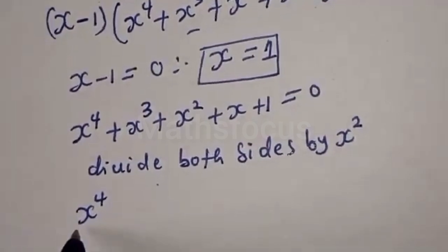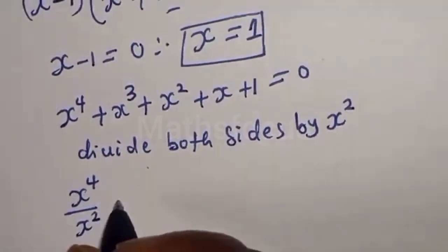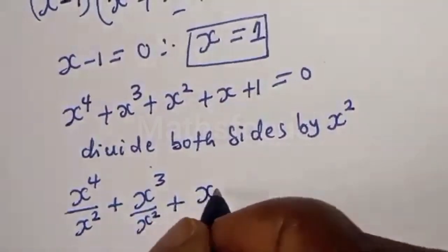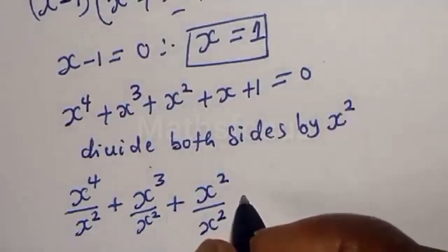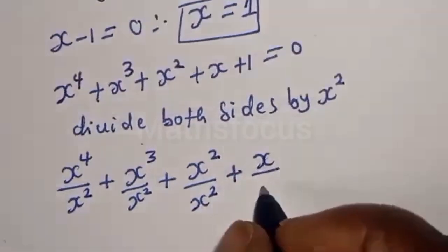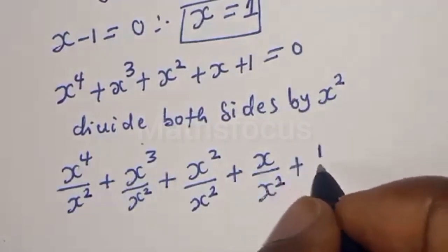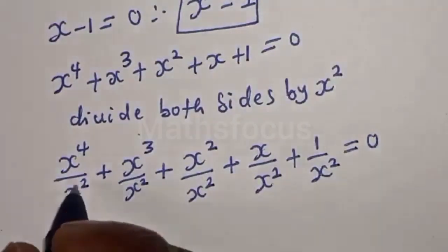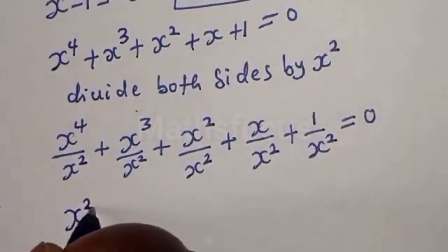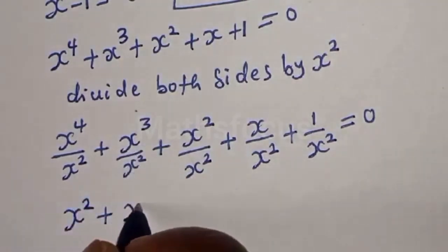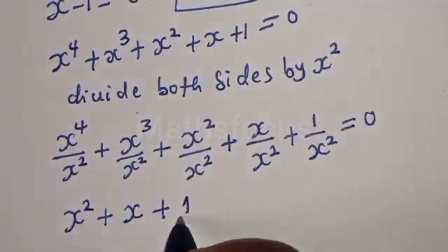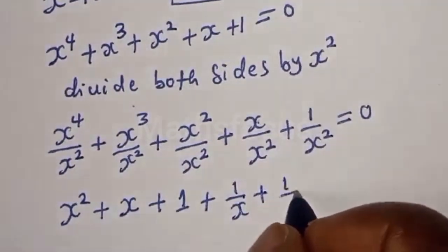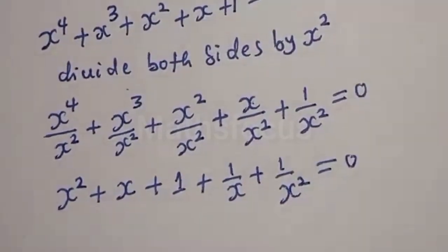We get x⁴ over x² plus x³ over x² plus x² over x² plus x divided by x² plus 1 divided by x² equals 0. So x⁴ over x² gives x², x³ over x² gives x, x divided by x² gives 1 over x, and 1 over x² gives 1 over x² equals 0.